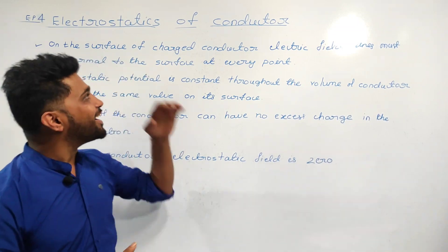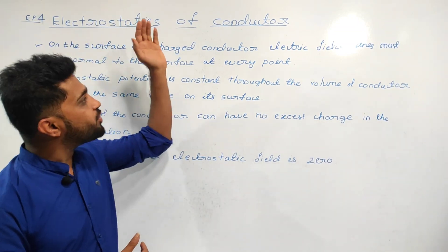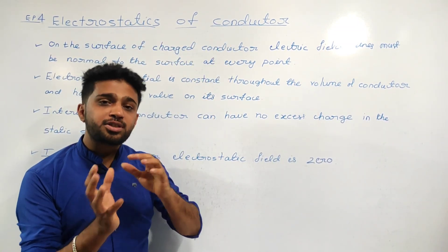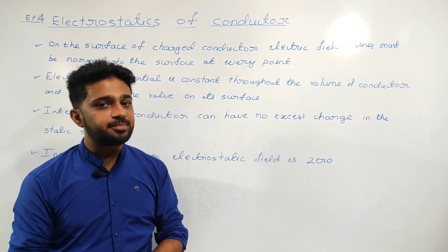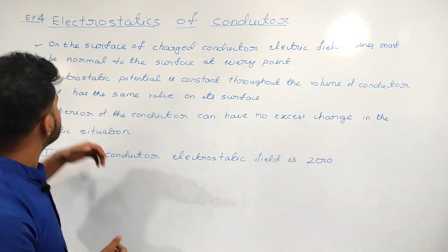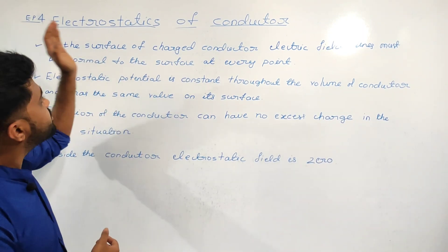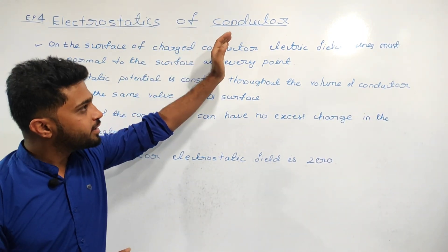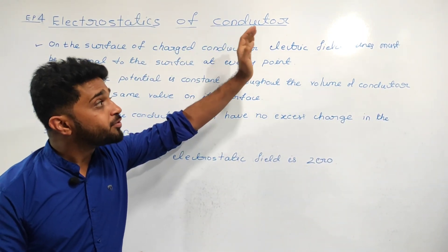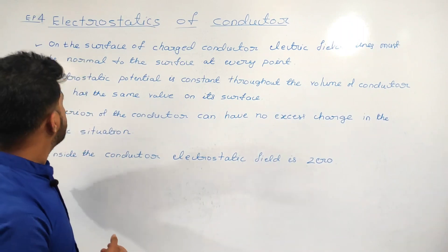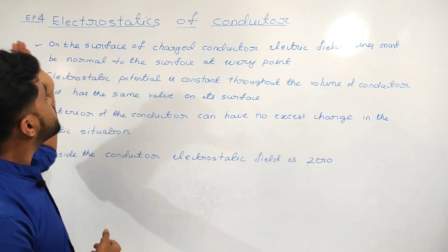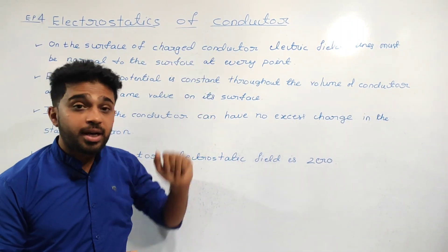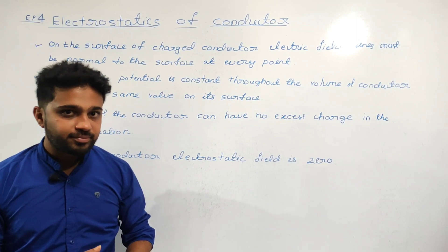Electrostatics of a conductor — the first point: on the surface of a charged conductor, electric field lines must be normal to the surface of the conductor at every point.